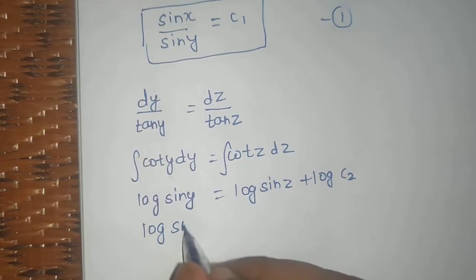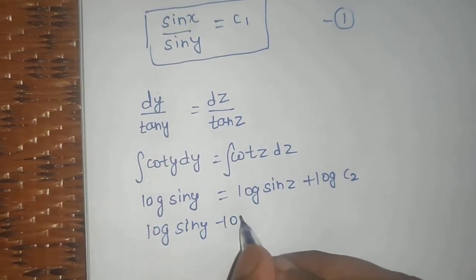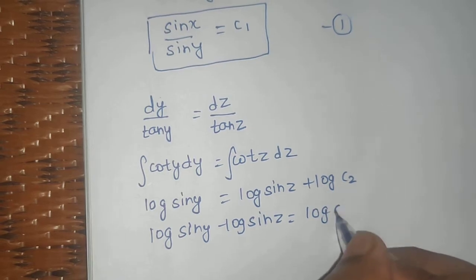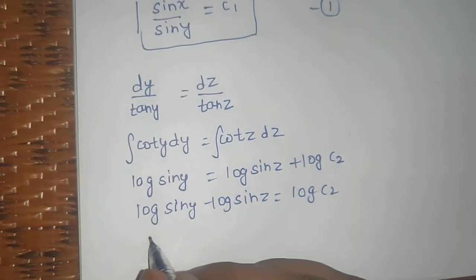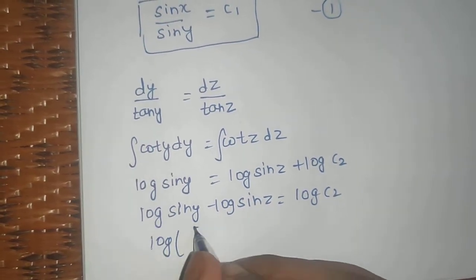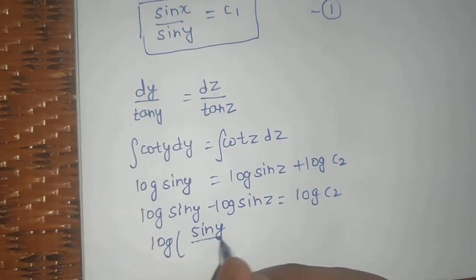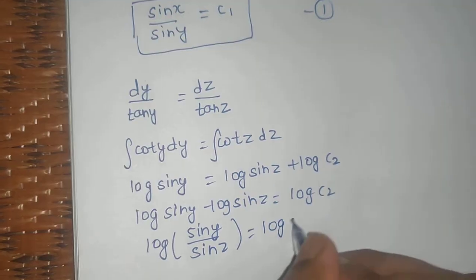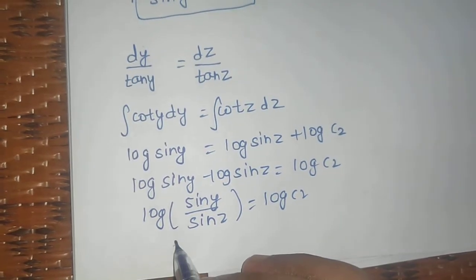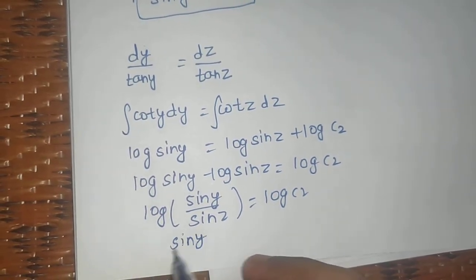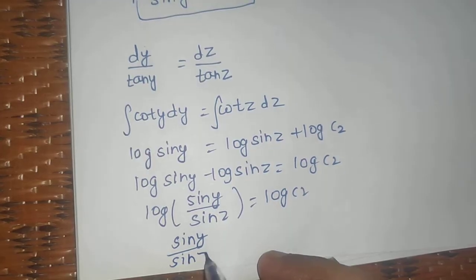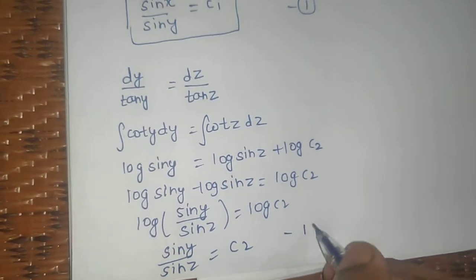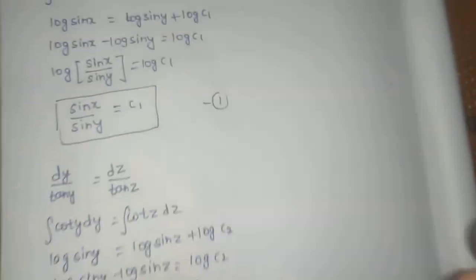Log sin y minus log sin z equals to log c2. Log a minus log b is log a by b, so log of sin y by sin z equals to log c2. From here you are getting sin y by sin z equals to c2. Removing log from both sides, this becomes the second equation.